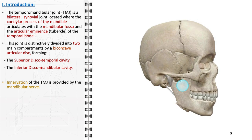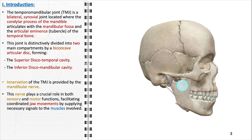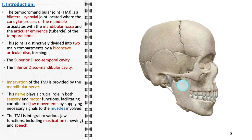Innervation of the temporomandibular joint is predominantly supplied by the mandibular nerve, the largest branch of the trigeminal nerve. This nerve assumes a crucial role in both sensory and motor functions, orchestrating coordinated jaw movements by delivering essential signals to the muscles involved in various jaw activities. The temporomandibular joint exhibits a remarkable range of movements, encompassing elevation and depression, protrusion and retraction, as well as lateral movements of the lower jaw, all indispensable for efficient mastication, clear speech, and a diverse array of facial expressions.